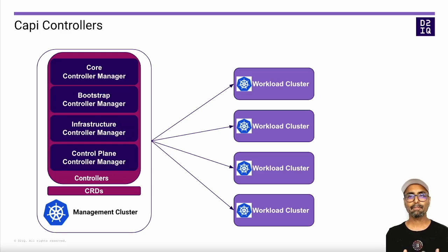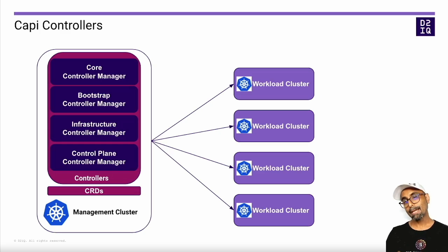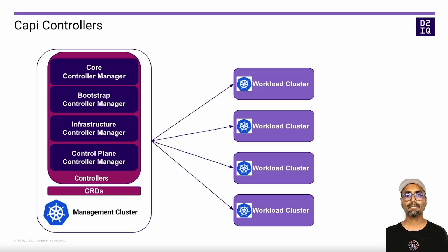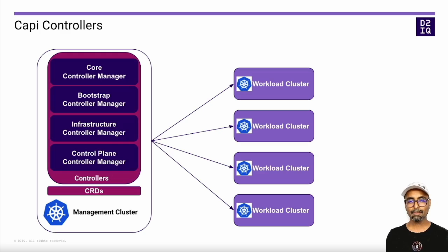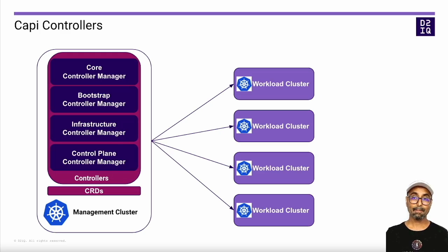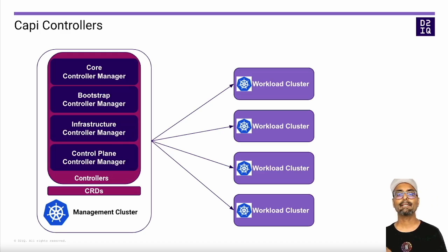The bootstrap provider is responsible for generating the bootstrap data and creating kubeadm config resources for each machine. The infrastructure provider is responsible for spinning up resources such as virtual machines and networking in the given infrastructure where a Kubernetes cluster is to be deployed. Each infrastructure type has its own provider that knows how to interact with the respective infrastructure's interface. The most popular infrastructure providers are AWS, Azure, GCP, and VMware.